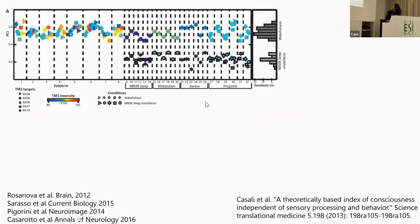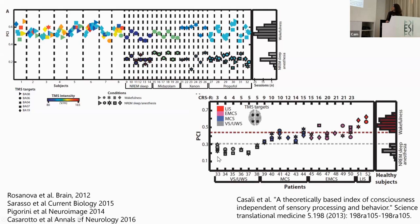There are many papers demonstrating that whether one measures sleep or different types of anesthesia, whenever there is lack of consciousness and a slow wave pattern, the perturbational complexity index is below 0.4. When there is wakefulness, this index is higher. This relation has also been established with different disorders of consciousness: unresponsive wakefulness syndrome, minimally conscious state, and locked-in syndrome show an increasing PCI reflecting increasing complexity in cortical patterns.